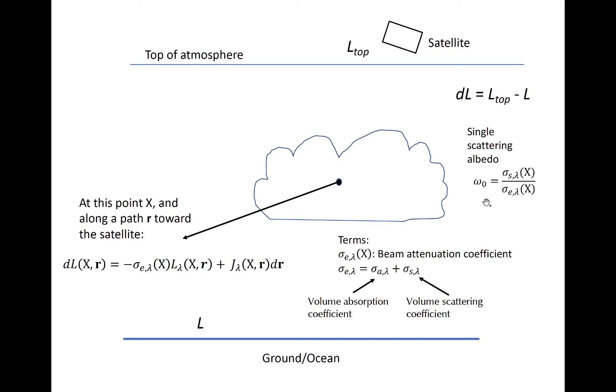We also define a single scattering albedo, which is the ratio of the volume scattering coefficient to the volume extinction coefficient. It describes the probability of an interaction between a photon and a potential scatterer as being a scattering interaction instead of an absorption.